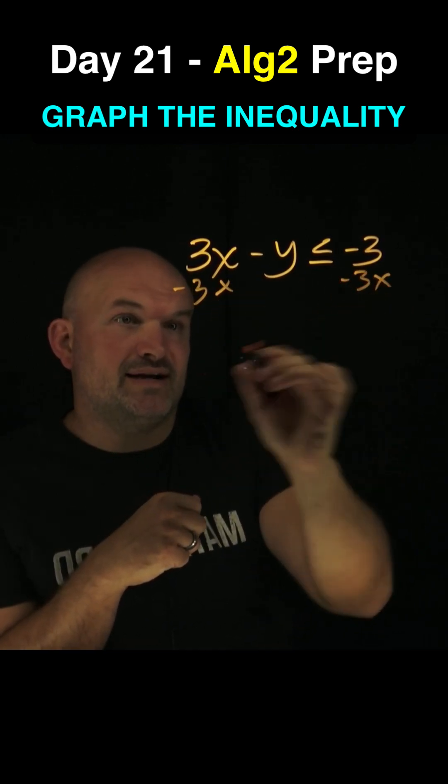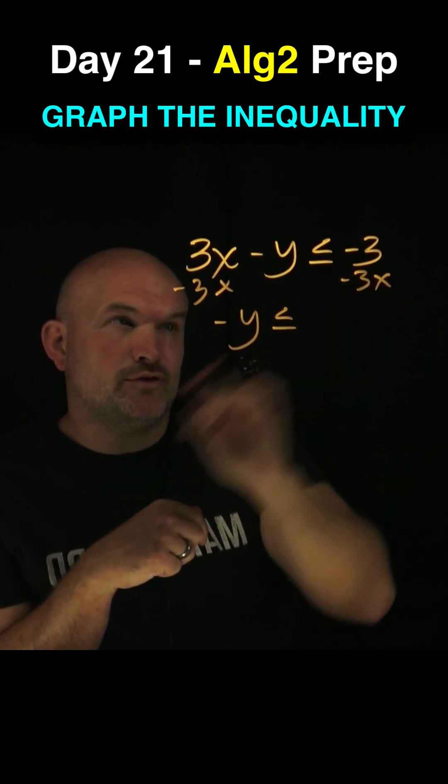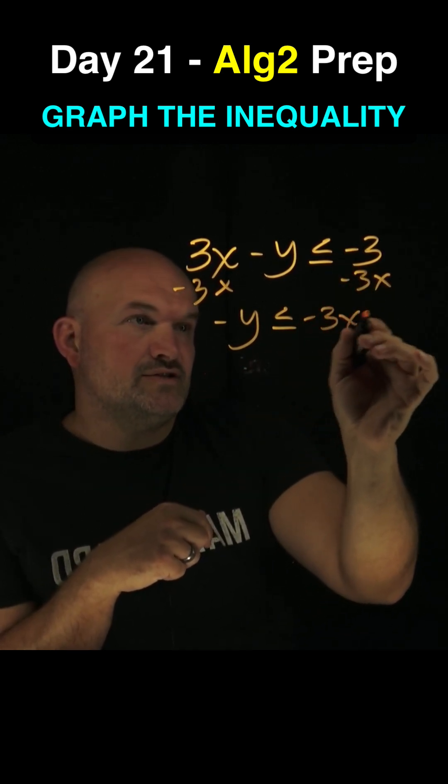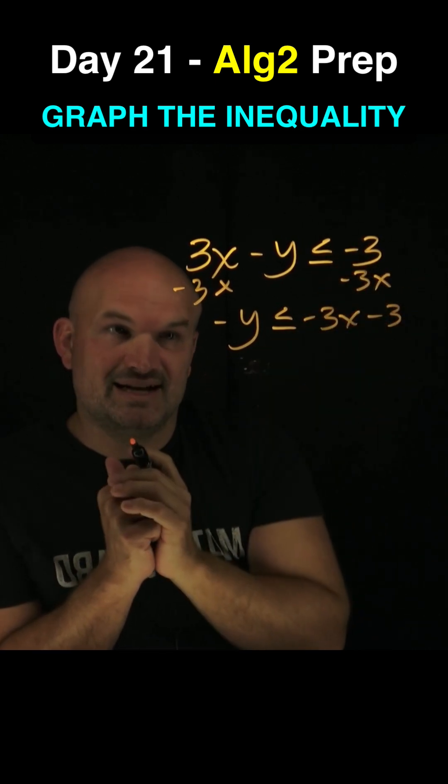So the first thing I'll do is subtract a 3x on both sides. That's going to give me a negative y is less than or equal to. Let's write the 3x in front of this negative 3. So therefore, it'll be like that, because remember, it's a negative 3x and a negative 3, so make sure you keep the signs consistent.